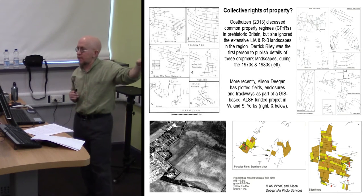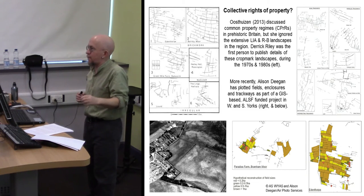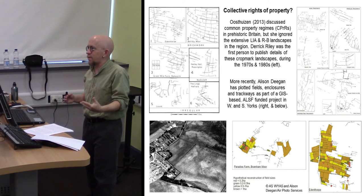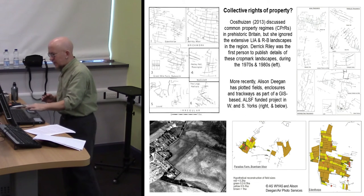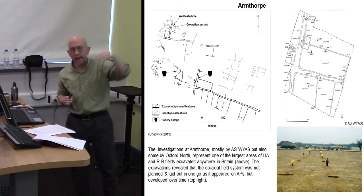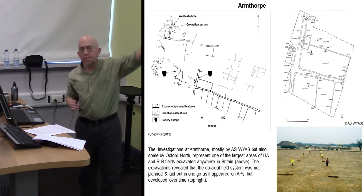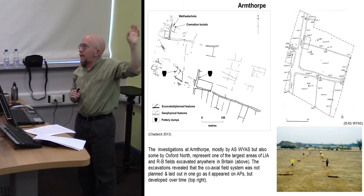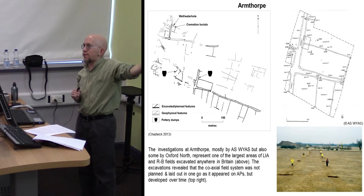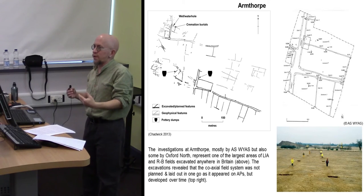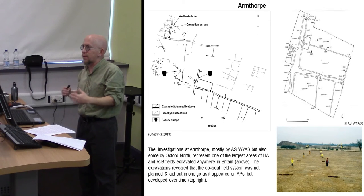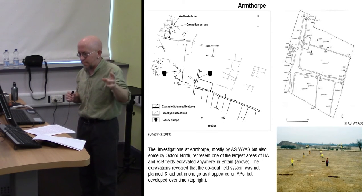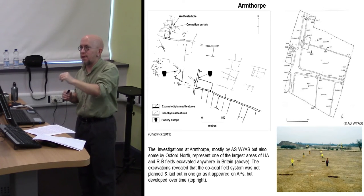Alison Deegan's GIS analyses have broken these field systems down into groups according to size and area — these might be the holdings of particular households, farmsteads, or lineages. But alternatively, there might have been functional land-use concerns behind this. Where extensive areas have been excavated, as at Armthorpe in South Yorkshire, the apparent uniformity seen on crop marks just breaks down completely. Fields were being added to one another over time, and even the double-ditch trackways did not start off as double-ditch trackways — they were field boundaries. So these are emergent structures — very much meshworks or assemblages that develop over time in heterarchical ways, and it's very hard to see this as top-down hierarchical imposition.